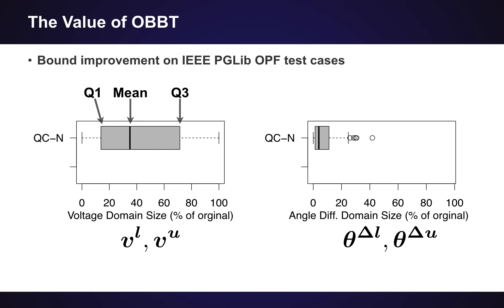Interestingly, all the angle differences are tightened or improved, whereas for the voltages, some buses are able to reach their original full range — meaning there are operating points where you could reach the highest and lowest allowable voltage. It's important to note these results are for only the default load profile in these cases. If you change the load profile, things could be different. But in the original paper we do some analysis on uncertainty about the load, and you can still reduce the bounds pretty significantly.